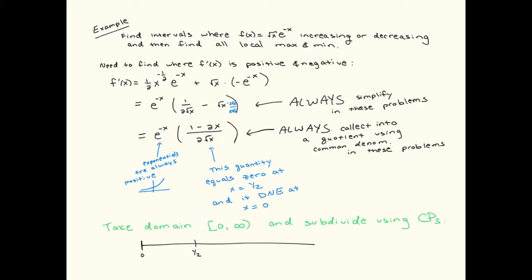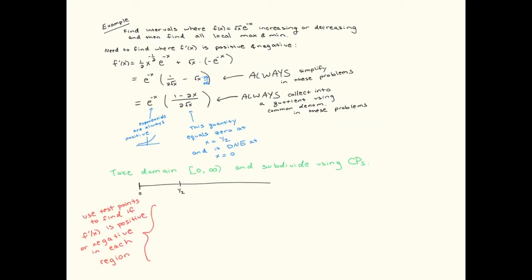How we use critical points here is slightly different from the previous video. We're going to take our domain — which for the square root function is zero to infinity, including zero — and subdivide it at x equals one-half. This is an exercise similar to pre-calculus, where you're trying to figure out if a quantity is positive or negative. The function equals zero at x equals one-half and does not exist at x equals zero. Then we do a test point in each interval — let's say x equals one-fourth.